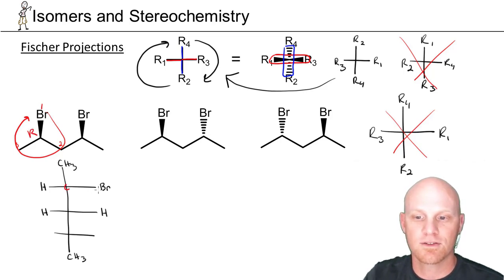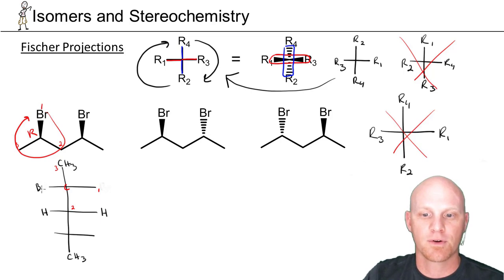I did the same thing for this carbon here. Here would be priority 1, priority 2, priority 3. And this thing looks R, and it's really S. So it turns out I got this exactly backwards. So let's go back and erase these and get them correct. We've got the bromine on the left and the hydrogen on the right.